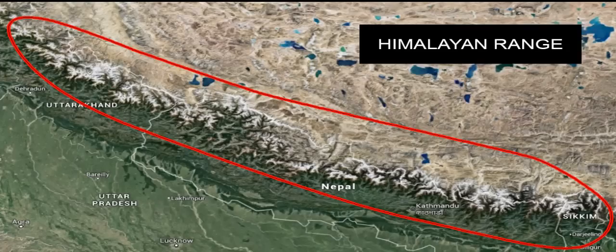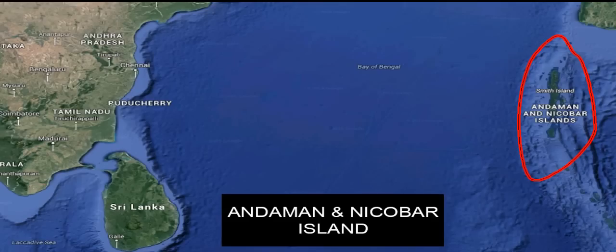The collision between the Indo-Australian plate and the Eurasian plate resulted in the formation of the Himalayan range. Due to this collision, the Andaman and Nicobar Islands in the Bay of Bengal were also formed. The Himalayan ranges consist mostly of uplifted sedimentary and metamorphic rock.